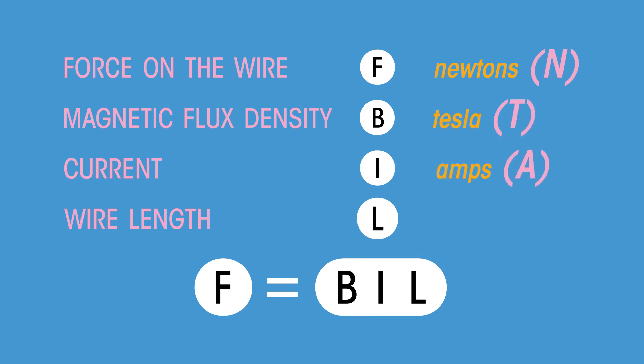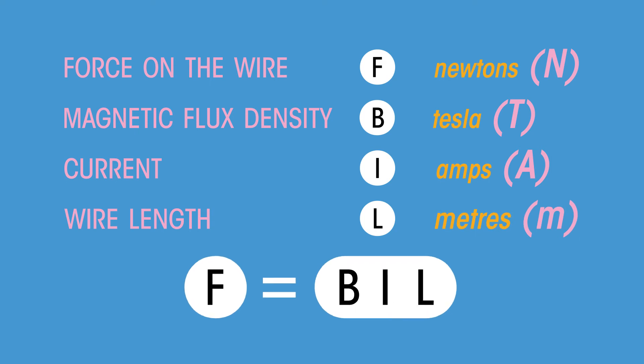Here, force on the wire is measured in Newtons, magnetic flux density in Tesla, current in amps, and length in meters. You can see from the formula that increasing any one variable will give a larger force.